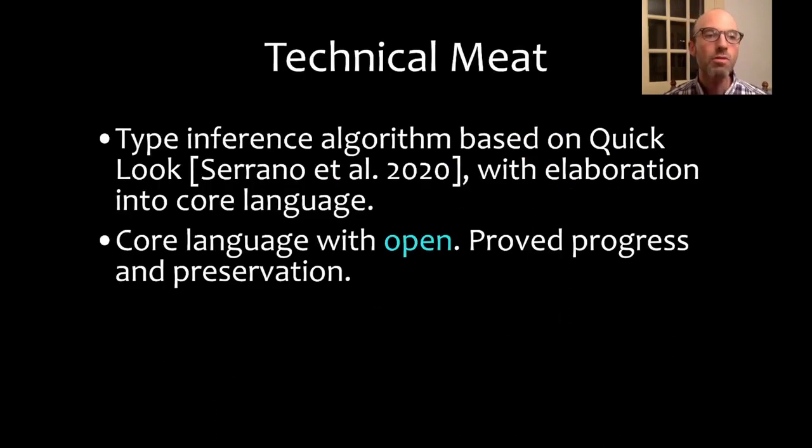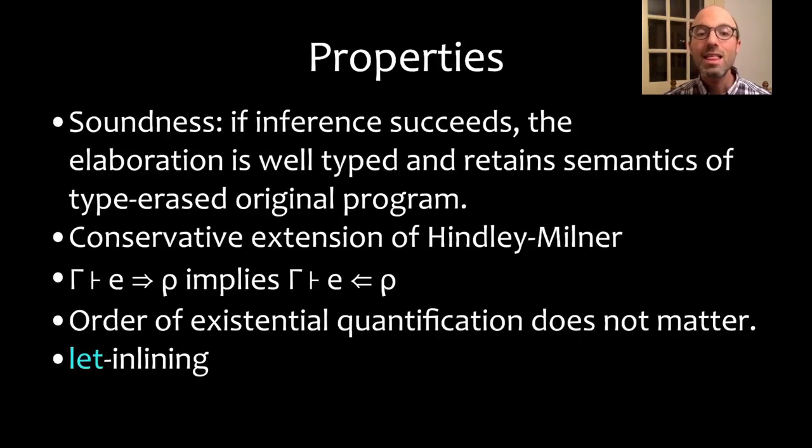I've talked a lot about the motivation and some user-facing features. What's the technical meat? In the paper, there's a type inference algorithm based heavily on quick look that elaborates into a core language built with open that is type safe. This algorithm and language has some nice properties. If the inference algorithm succeeds, we're guaranteed that the elaborated program is well-typed and that it retains the semantics of the original program if we just erase all of our types. This algorithm is a conservative extension of Hindley-Milner, meaning all of our old programs continue to type check. It's a bidirectional algorithm and when we infer a type, that same type can be used in checking mode. This means we can add annotations without affecting typability. We also have some nice properties that we can refactor our programs, reordering existential quantification and doing let inlining without disrupting typability.